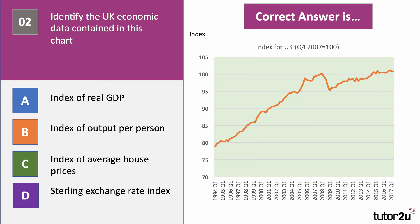The correct answer to question two is an index of output per person — it's an index of productivity in the UK. The crucial point is that productivity did fall in the early stages of the last recession but has been very slow to recover. This is sometimes called the productivity puzzle: why has output per person in the UK risen so slowly in recent times? Indeed, it's barely above the level it was in 2007.